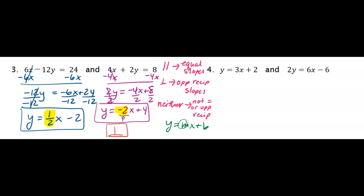Now let's look at number 4. Number 4 is halfway done for us because if you look at that first equation, I can already see the slope is 3. That one's already in slope-intercept form. So all we have to do is put the second equation in slope-intercept form and we're done.